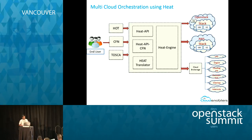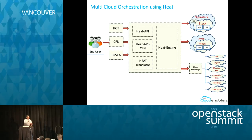We see some new standards coming in — Tosca. There is a new project in OpenStack called the HEAT Translator, which translates Tosca to HOT templates. The HOT template can then be applied using a HEAT engine to orchestrate the different resources.